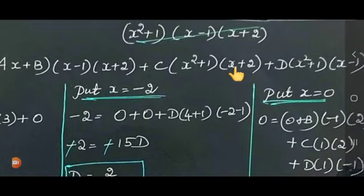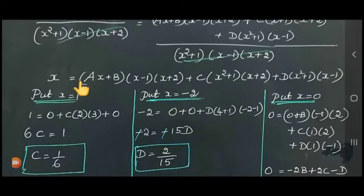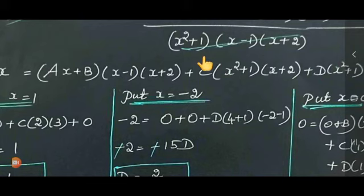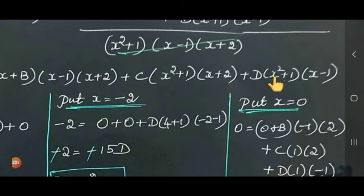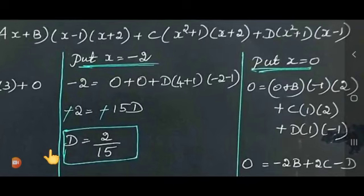Next, substitute x = -2. When x = -2, the first term and second term both become 0. So: -2 = D((-2)²+1)(-2-1) = D(4+1)(-3) = D × 5 × (-3) = -15D. The negatives cancel, giving D = 2/15.